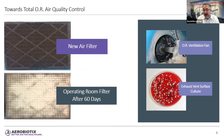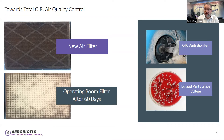To illustrate how contaminated operating room air can be, we can look at filters, ventilation systems, and cultures from operating rooms. You can clearly see significant operating room contamination after a relatively short period of time, affecting return vents, ventilation systems, and exhaust vents, including the growth of pathogenic bacteria throughout the operating room.